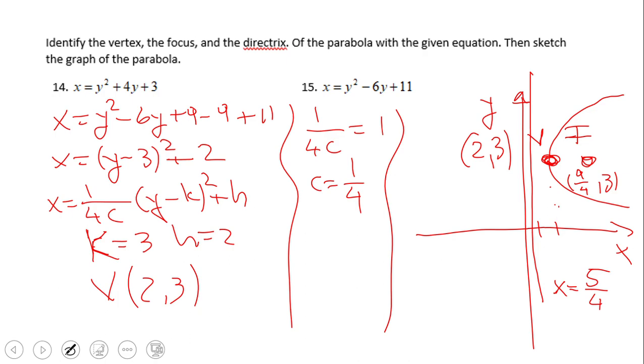You notice I complete a square, then I find the vertex. Be careful here, h is 2, k is 3. So this is the vertex. Then c again, c equals 1 fourth. In this case, that allows me to put a vertex, then move 1 fourth inside and get the focus, 1 fourth outside and get the directrix.